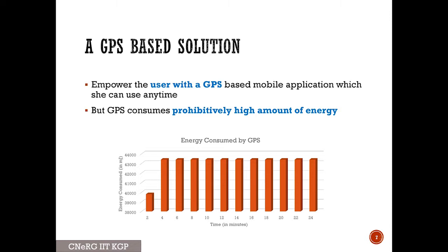The most trivial solution is having a GPS — with GPS we can monitor location. But GPS is extremely power-hungry, so if we develop an app with GPS, the battery will drain very fast. So we want to avoid GPS while developing this kind of app, and we need to minimize the use of GPS here.